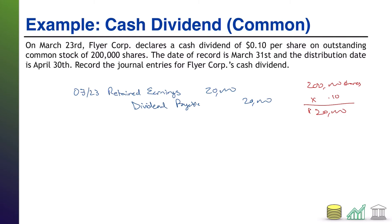The next date we encounter is the date of record, March 31st. The date of record is not an accounting date. An investor must hold the common stock on that day in order to receive the dividend coming shortly thereafter, so nothing happens on this day from an economic activity perspective.